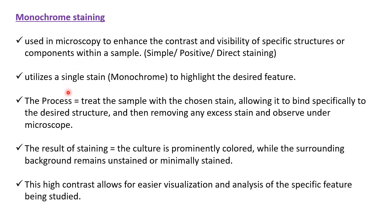Monochrome staining utilizes a single stain — 'mono' means single and 'chrome' means color — so a single color is used to highlight the desired features of the sample. In short, the process involves treating the sample with the chosen stain, allowing it to bind specifically to the desired structure, then removing any excess stain by washing, and finally observing the slide under the microscope.